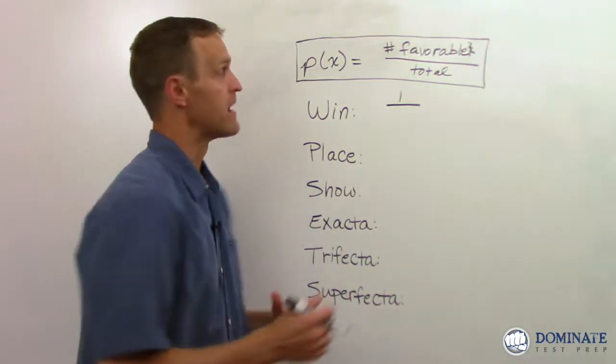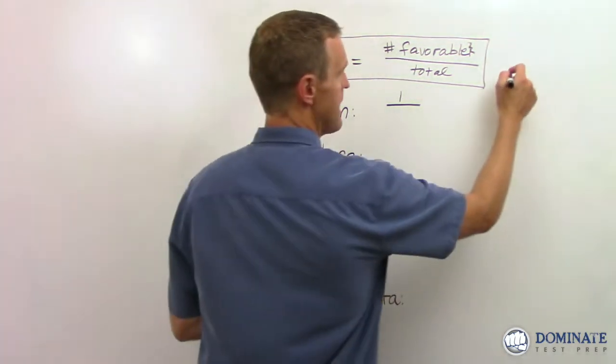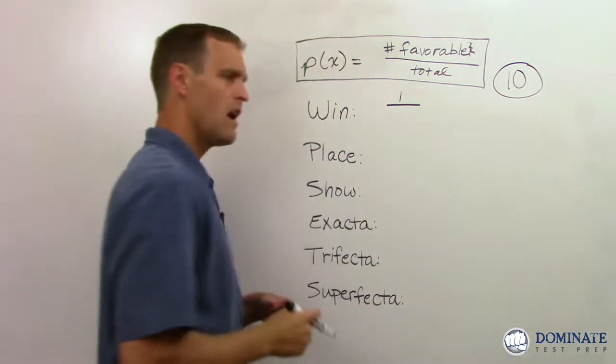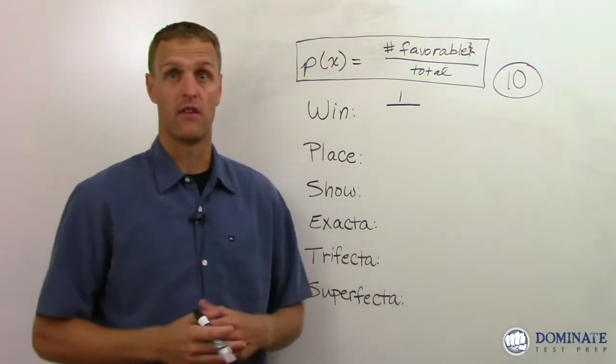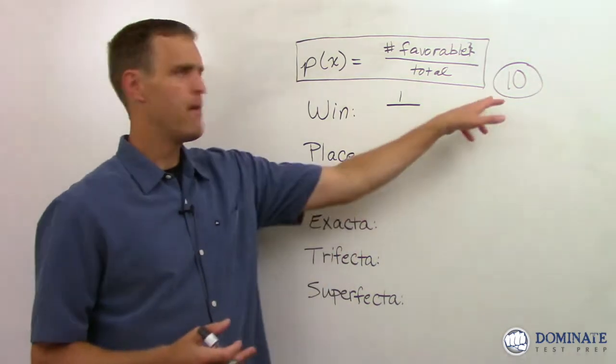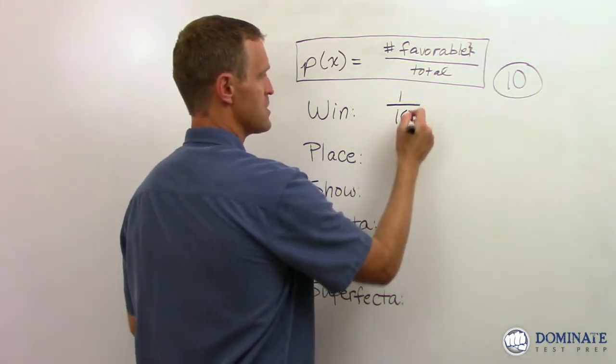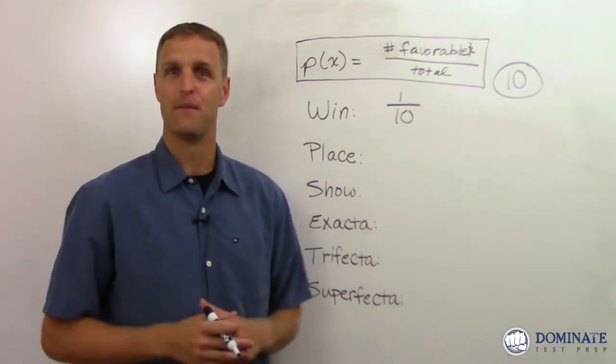Now, how many total outcomes are there? Well, it depends on how many horses are in the race. And in the Belmont Stakes coming up in a couple of days, they're saying there are going to be 10 horses in the race. There could be scratches. A lot of times there are more horses, like in the Kentucky Derby, there's 20 horses. But in the Belmont, there's going to be 10 horses. So the probability of picking your horse to win is one out of 10. That's pretty simple, pretty basic.